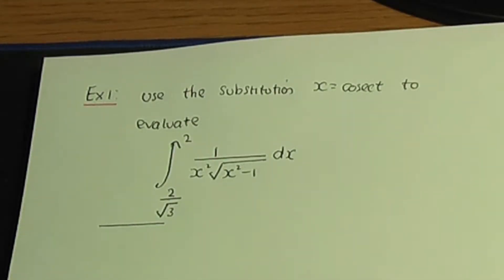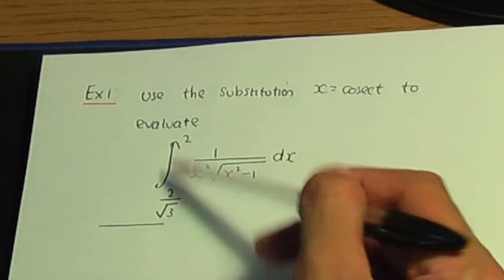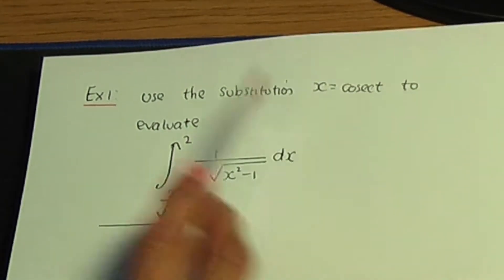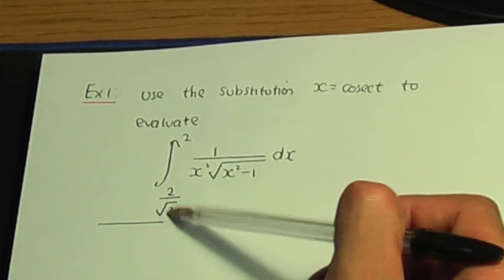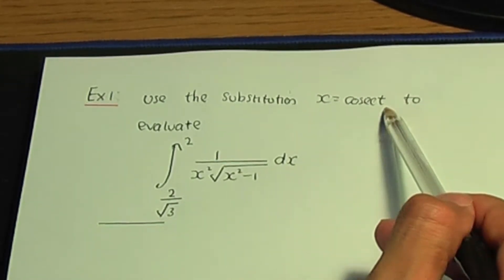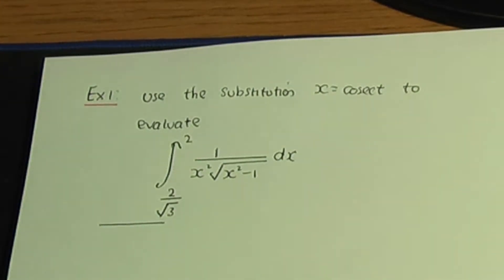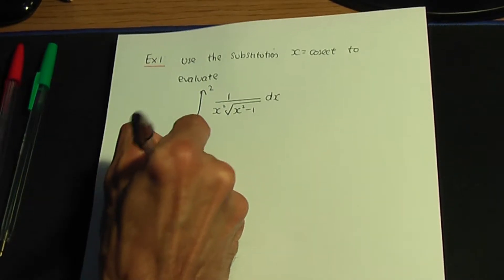One thing we need to watch out for is we need to use a trigonometric identity to help us with this substitution problem. Also, our integral has limits and we're conducting a substitution, so remember we need to work out the new limits of integration. So step number one: